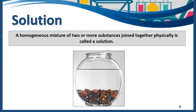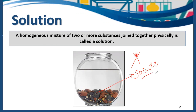But wait — this is not a solution. Why? Because you can see the particles of solute here with your naked eye. If you can see the particles of solute with your naked eye, it means it's not a homogeneous mixture. It's not a uniform mixture, so it's not a solution either.